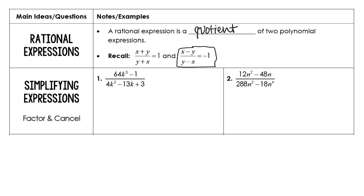For all simplifying, the very first thing you have to do is factor and then cancel. Keep in mind this is going to use our cube formula from the previous lesson. We're looking at what cube times what else cube. So for this one, we have 4k all cubed minus 1 all cubed. In the denominator, we multiply that 4 over, do our slide, then divide. So we have k squared minus 13k plus 12, and now we're set up and ready to factor.